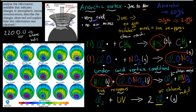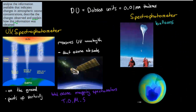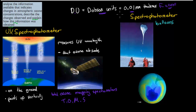The last part is explaining how this information was obtained. First, I want to talk about DU — Dobson units — which is a measure of the thickness of ozone. 0.01 millimeters of thickness equals one Dobson unit. The higher the DU value, the thicker the ozone, the more we have. You should also know that roughly 220 DU is what we consider an ozone hole — that's a very small amount of ozone. Usually it's about 400 to 500, so below 220 is an ozone hole.